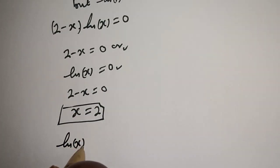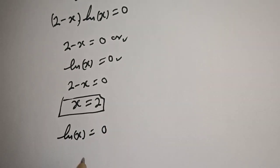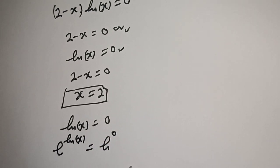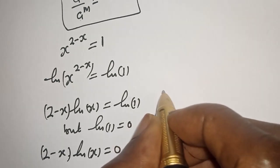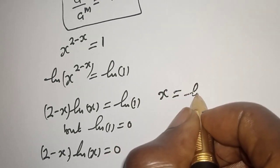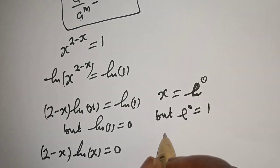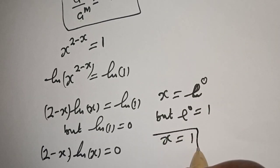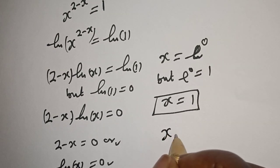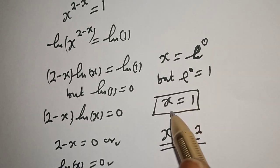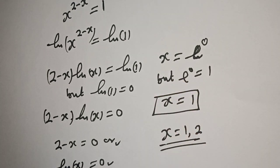From the second case, natural log of s equals zero. Taking e of both sides, e raised to the natural log of s equals e raised to zero. The e and natural log cancel, giving s equals e raised to zero. Since e raised to zero equals one, s equals one. This is the second value of s. Our final answers are s equals one or s equals two. If you enjoyed the class, please don't forget to like, share, comment, and subscribe. Thank you.